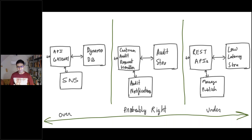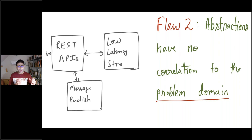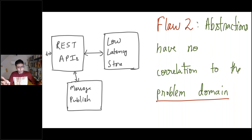Flaw two is that abstractions have no correlation to the problem domain. This results in under or over abstraction, and may produce a design that is too generic or too specific. The right abstraction depends on the problem domain and how you define the domain. It's super important that you actually define the domain. For example, one design option for customer audit is too generic for that problem domain, but it may very well fit some other problem domain — such as building a framework for serverless computing.